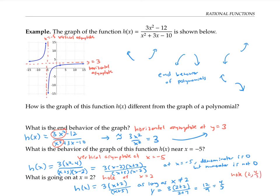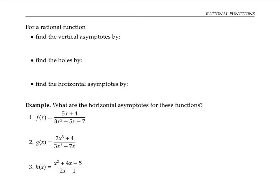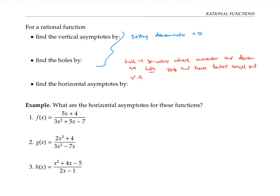Now that we've been through one example in detail, let's summarize our findings. We find the vertical asymptotes and the holes by looking at where the denominator is zero. The holes happen where the denominator and numerator are both zero and those factors cancel out. The vertical asymptotes are all other x values where the denominator is zero. We find the horizontal asymptotes by considering the highest power term in the numerator and the denominator.